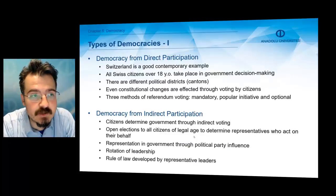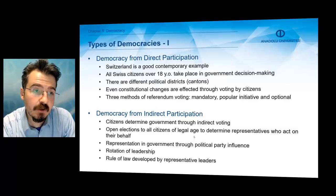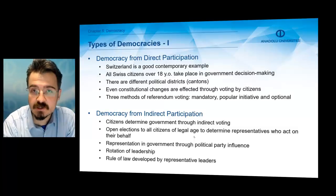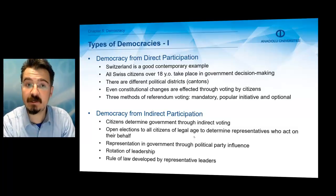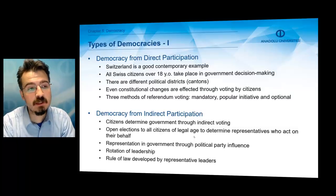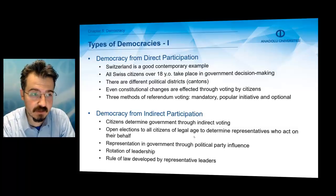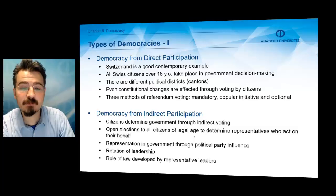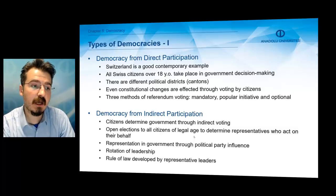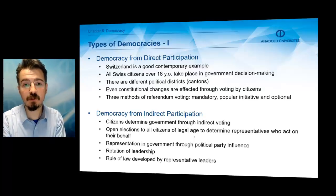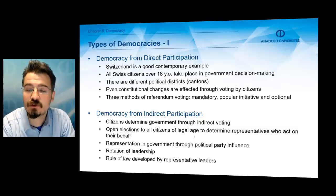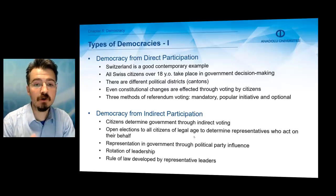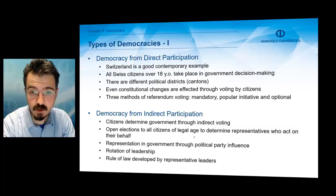Let's move on to types of democracies. Democracy can be direct democracy, meaning democracy from direct participation, or it can be indirect democracy, which comes from indirect participation of citizens. Switzerland is a good example of direct democracy because all Swiss people over 18 years old take part in government decision-making. There are different political districts called cantons, and people directly participate in decision-making through voting, even for constitutional changes. There are three methods of referendum voting: mandatory, popular initiative, and optional.